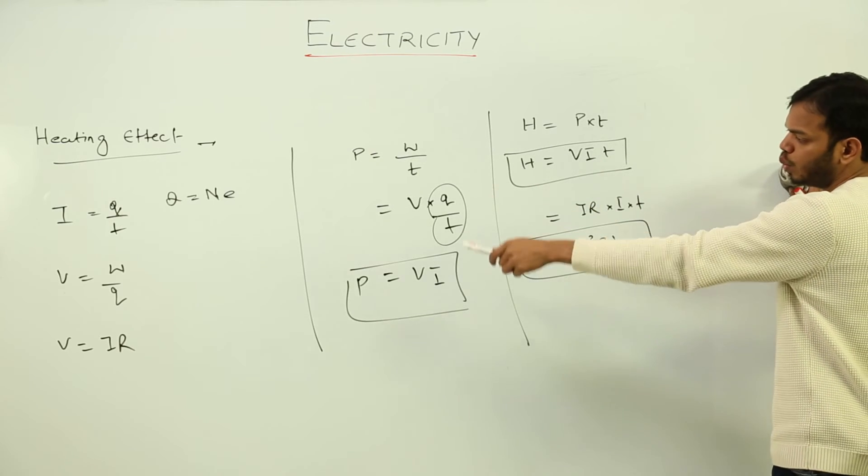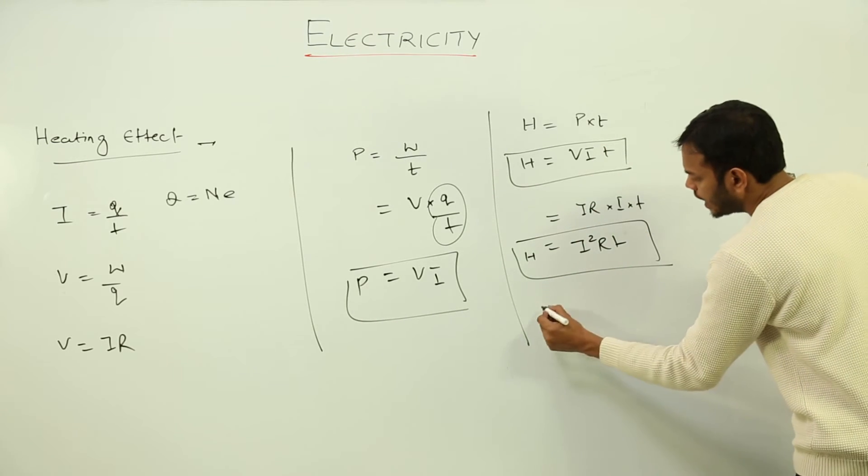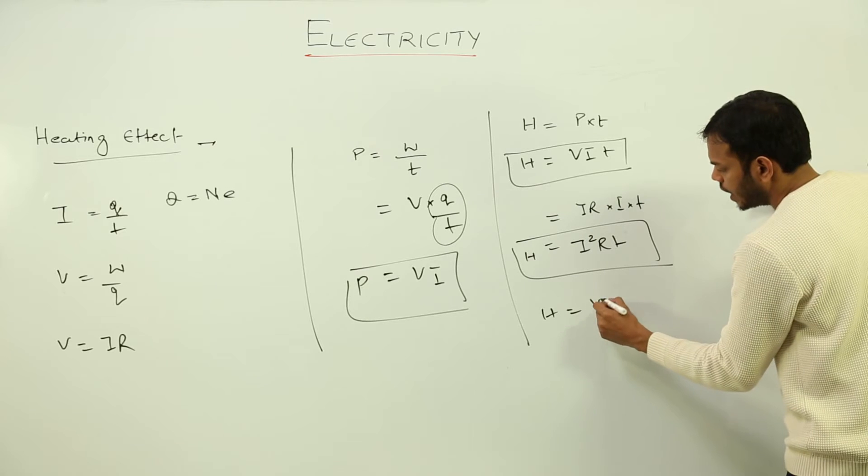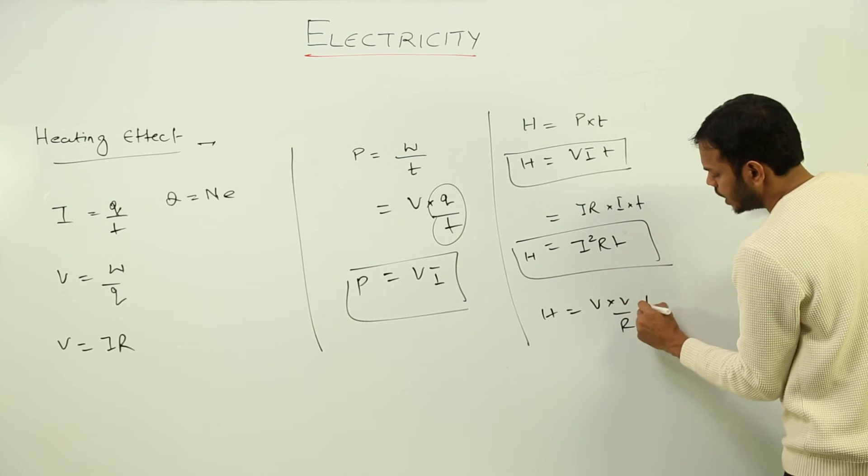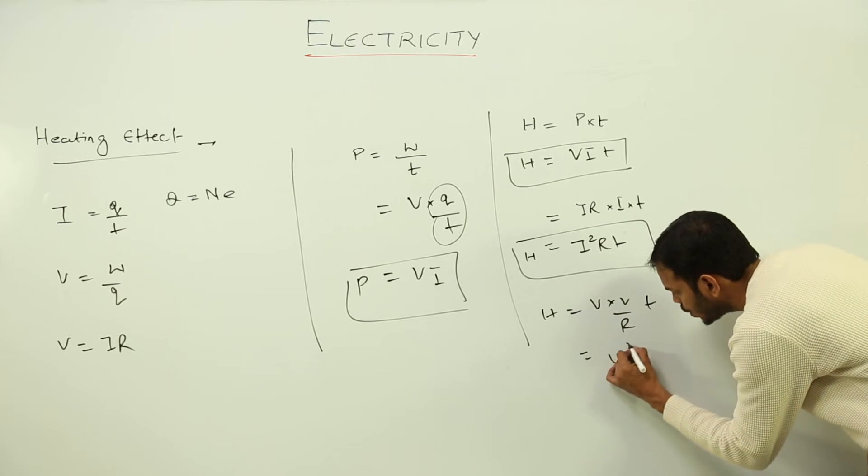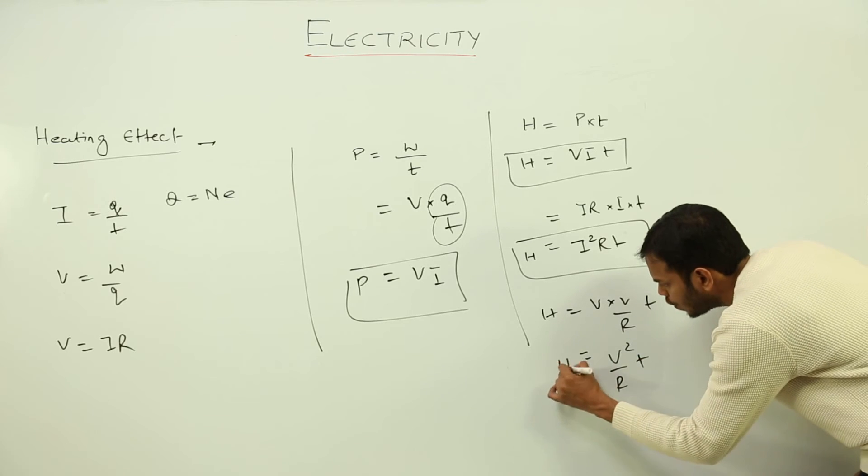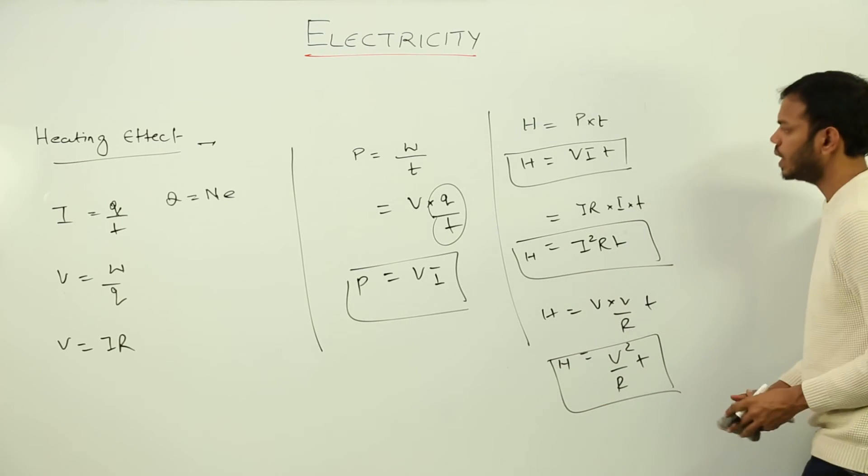I can also put I to be equal to V upon R, so I'll get V into V upon R times T. So this will give me V square upon R into T. So we have these three formulas for heating effect or the heat generated in a circuit having voltage, current, resistance.